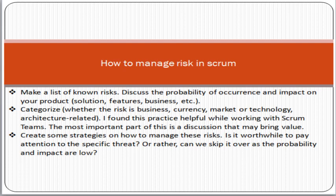First, you must make a list of known risks, then discuss the probability of occurrence and impact on your product or project solution. Categorize them — meaning you must categorize what category each risk belongs to, such as high, medium, or low. Then create some strategy or solution for how you can manage those risks.